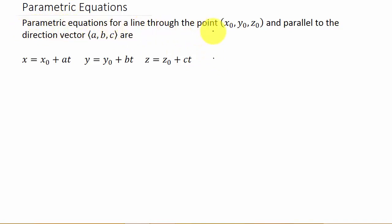So we have a property here: parametric equations for a line through the point (x₀, y₀, z₀) and parallel to the direction vector (a, b, c) are x = x₀ + at, y = y₀ + bt, and z = z₀ + ct.